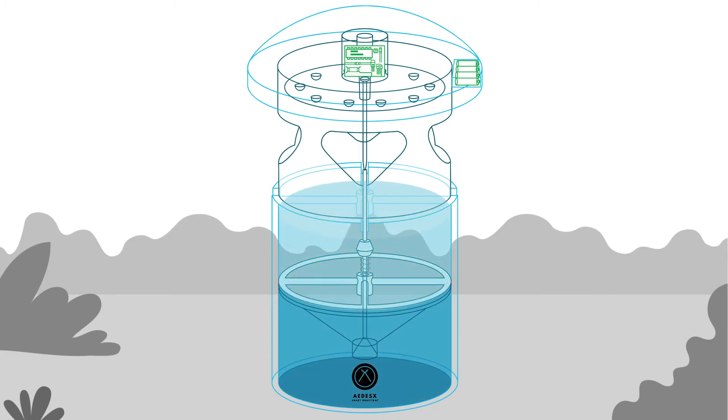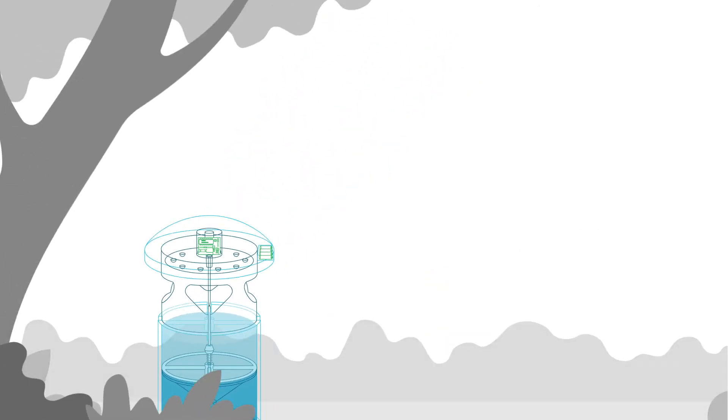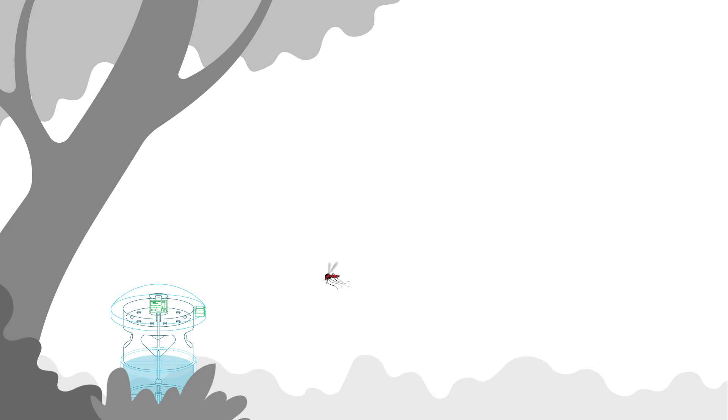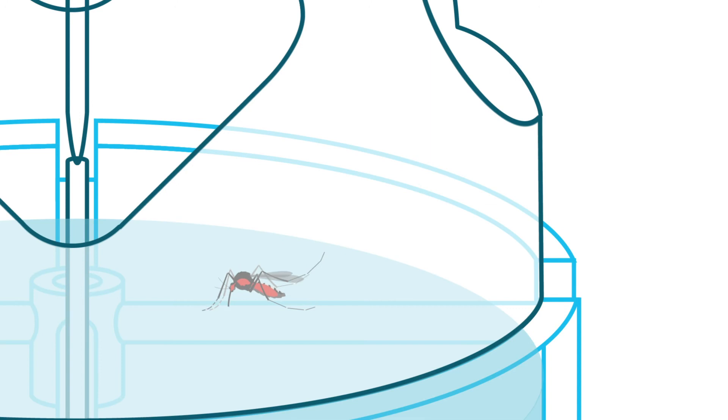When filled with aged water, the Aedes X Smart Gravitrap is naturally an attractive ideal breeding location for Aedes mosquitoes. She enters through the openings of the trap and lays her eggs on the surface of the water.